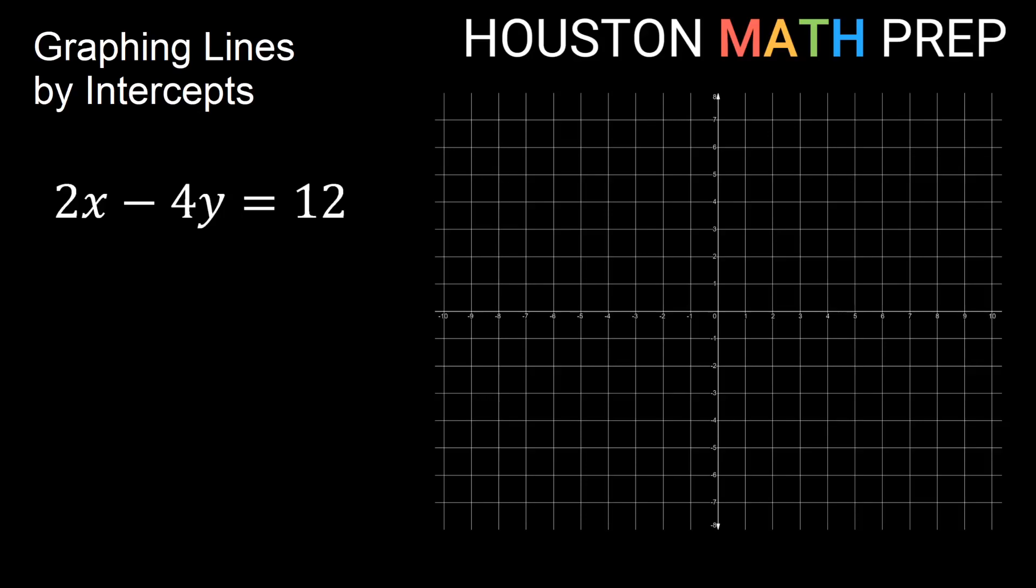Hey everyone, Houston Math Prep here. We're going to talk about graphing lines by intercepts in this video. A lot of times people start graphing lines using the slope intercept form first, y equals mx plus b, and that's a fine way to do it. Oftentimes in a math for business class or finite math class, we do a lot of graphing by intercepts. It's quicker for us to do when we're graphing lots of equations.